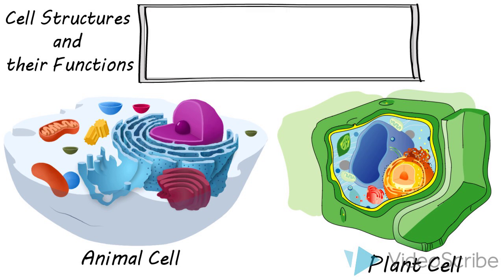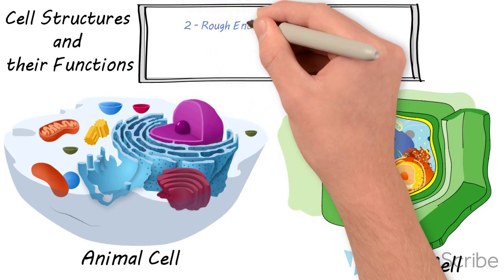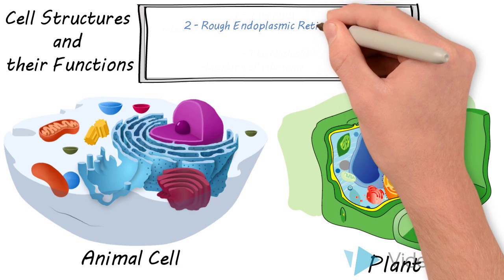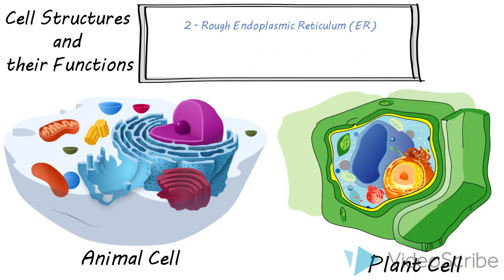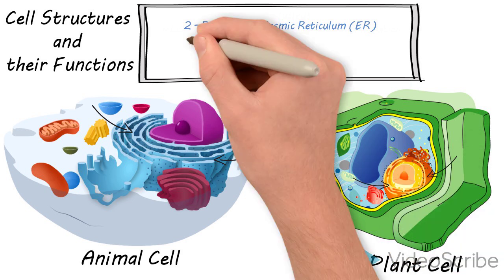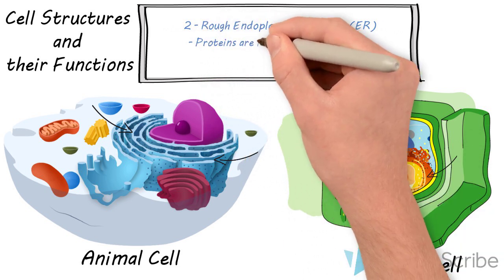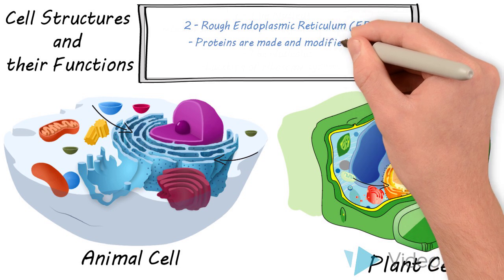Next, look at the rough endoplasmic reticulum or the rough ER. The rough ER is where proteins are made and modified, using the ribosomes which we'll talk about in a few minutes.